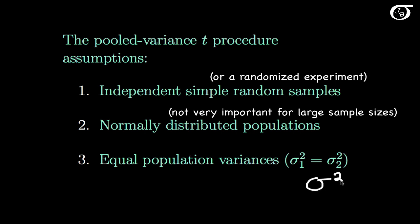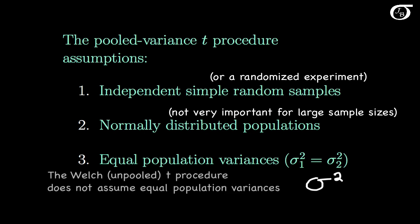We need the equal variance assumption in order for the resulting procedures to be exact. But if we don't feel comfortable making this assumption, there is another option: the Welch unpooled t procedure, which is an approximate t procedure that does not require this assumption.